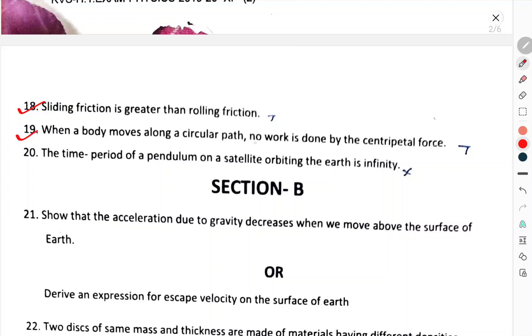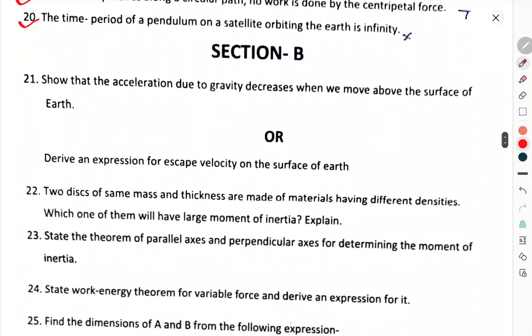A body can have acceleration even if the velocity is zero at that instant of time. The maximum range does not depend upon the angle of projection. Question number 18. The sliding friction is greater than the rolling friction. Question number 19. When a body moves along a circular path, no work is done by the centripetal force. Question number 20. The time period of the pendulum on a satellite orbiting the earth is infinity.